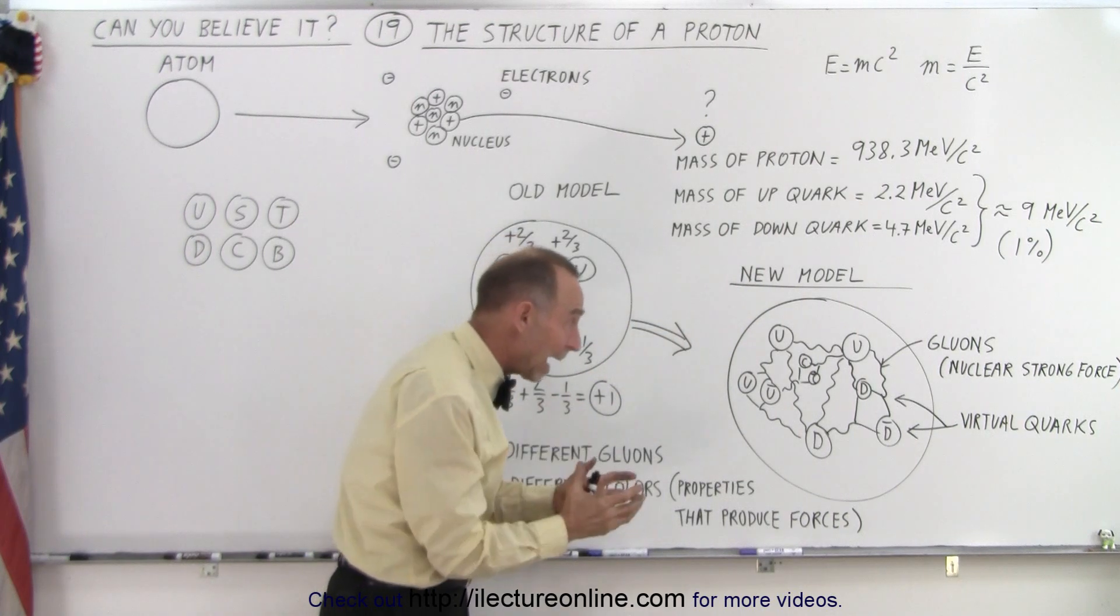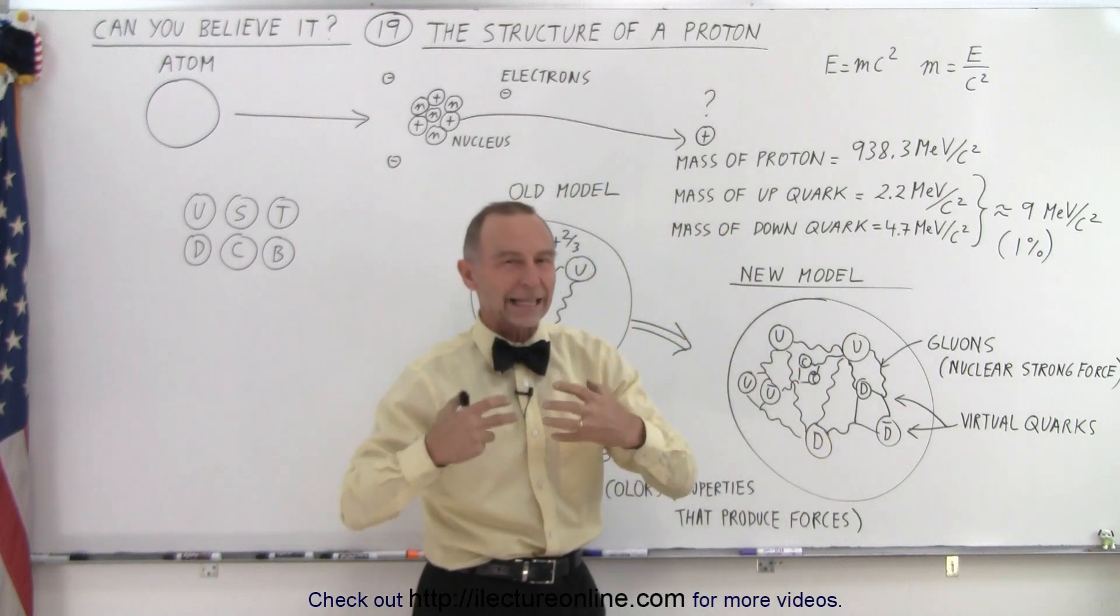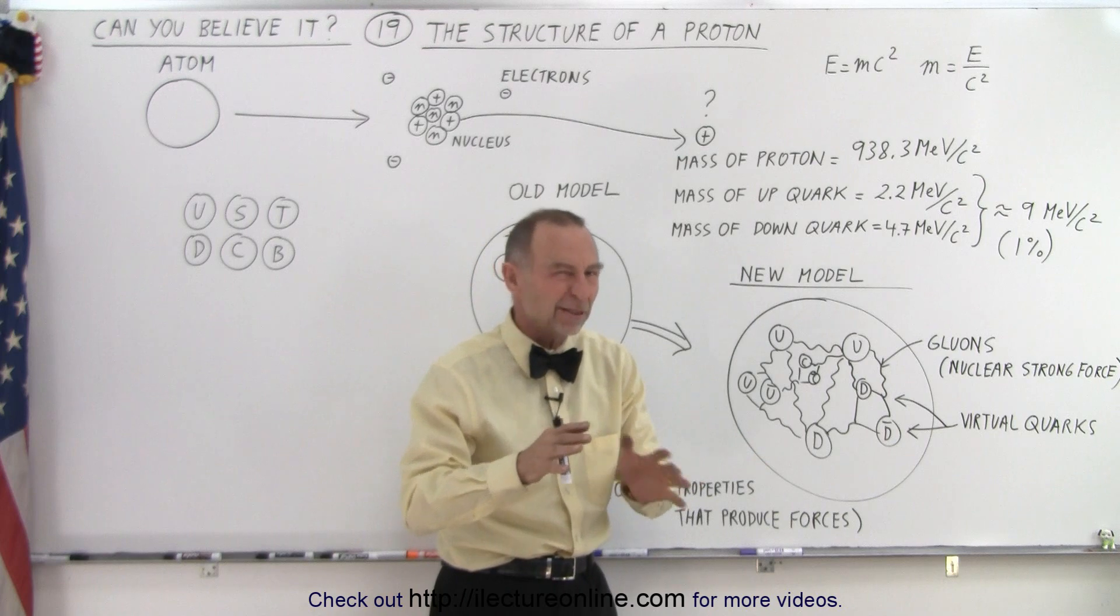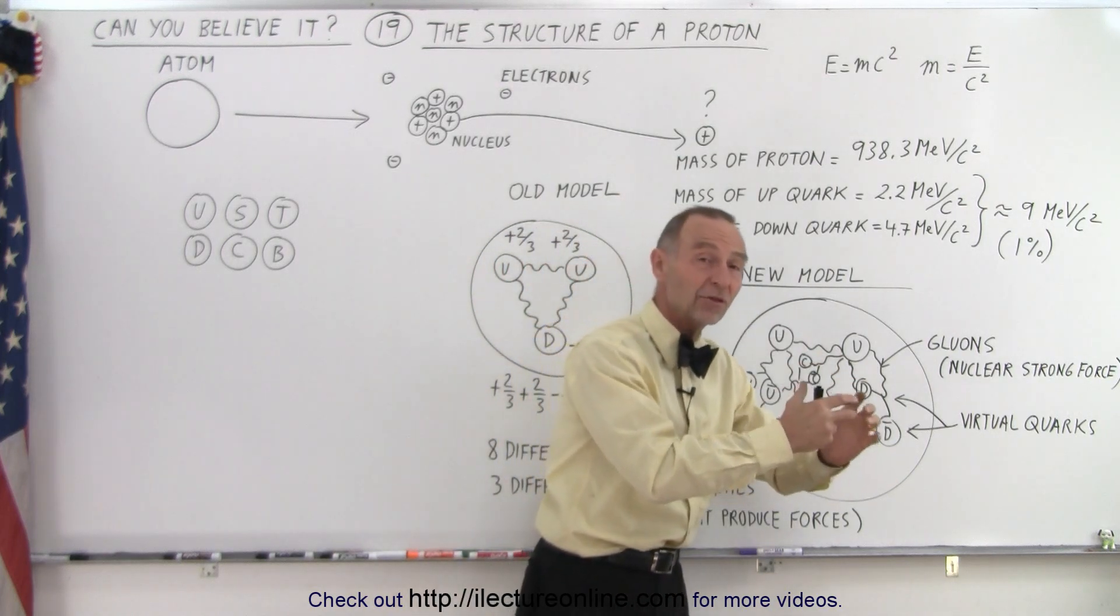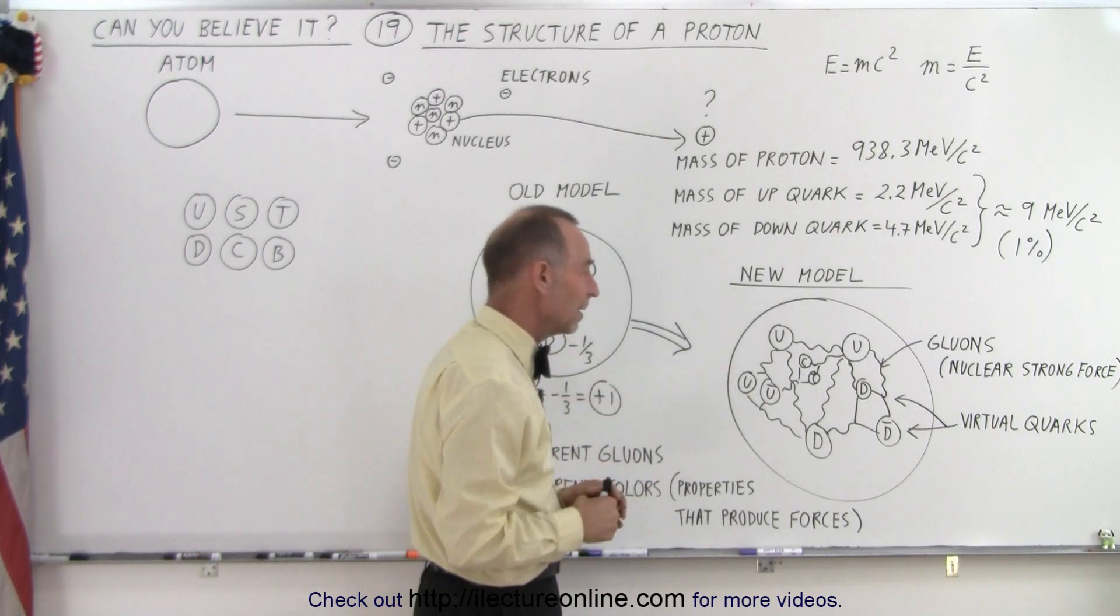And that's not happening because the gluons represent nuclear strong force that are even stronger than the electrical repulsive forces. Turns out that the estimate is about 137 times. We know it's at least over 100 times as strong as the electrical repulsive force is keeping everything inbound.